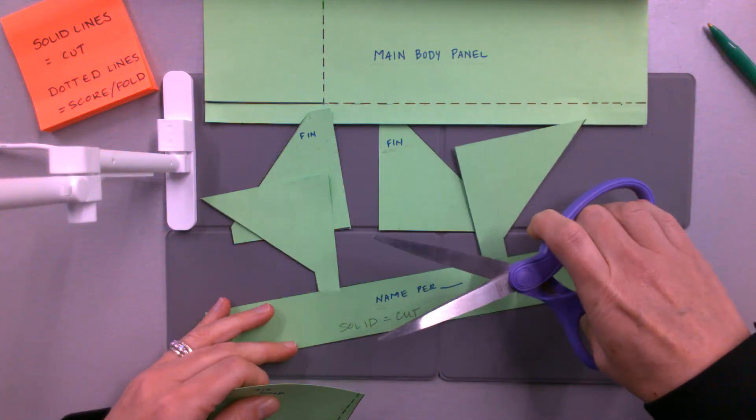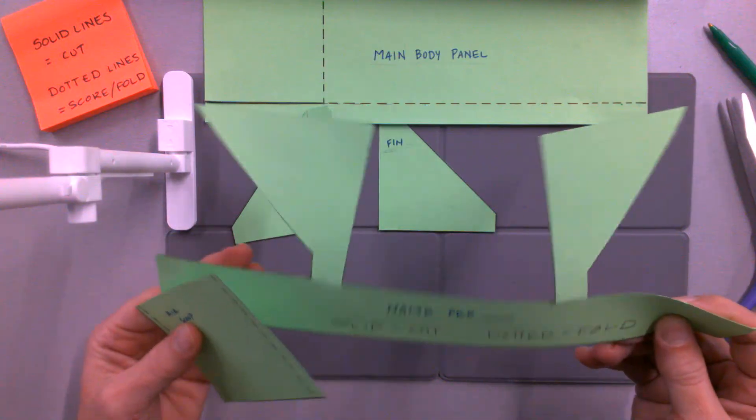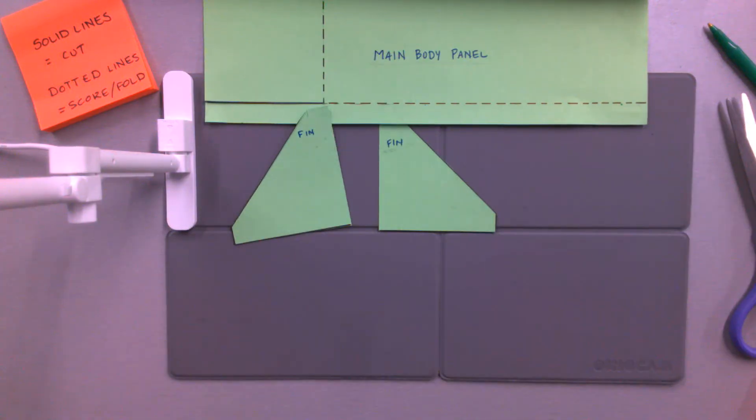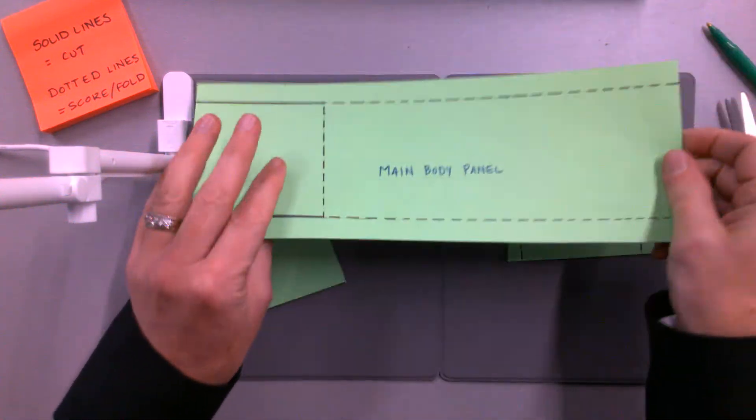At this point, you don't need this piece of paper anymore. This is extra, so you can recycle that. Now we've got our air scoop, our fins, and our main body panel.